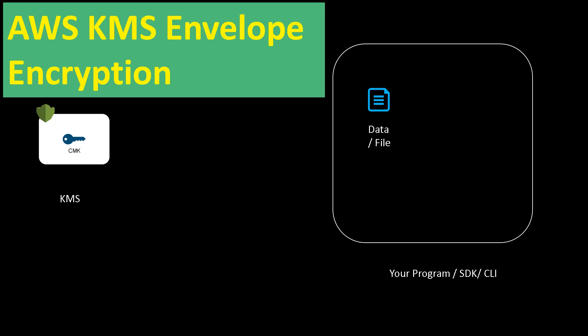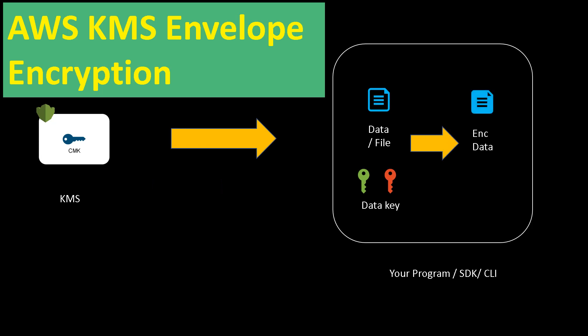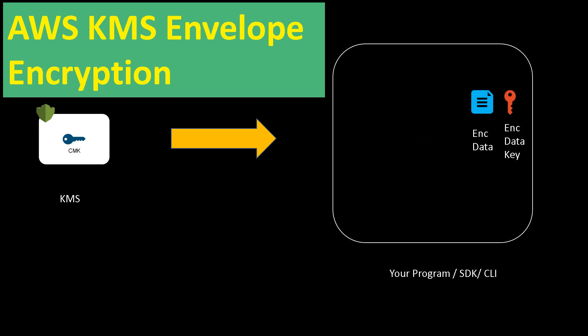How does it work? You ask AWS to generate a data key using your customer managed key. When you do that, you get a plaintext data key as well as an encrypted data key — this is by default. You then use the plaintext data key to encrypt your data and you have the encrypted data file. Along with that data, you also store your encrypted data key that you received from AWS KMS.